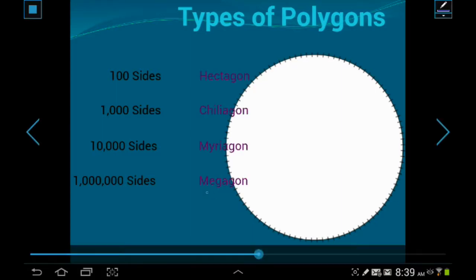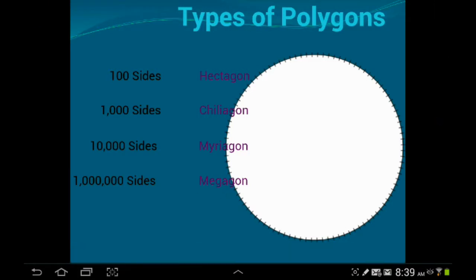There's kind of a cool one. Megagon. A million sides. Do not have a picture of that. So I'm betting that if you just grab a circle, you can call that a megagon, because the sides are probably so small, it basically just looks like a circle. I would put a lot of money on that.